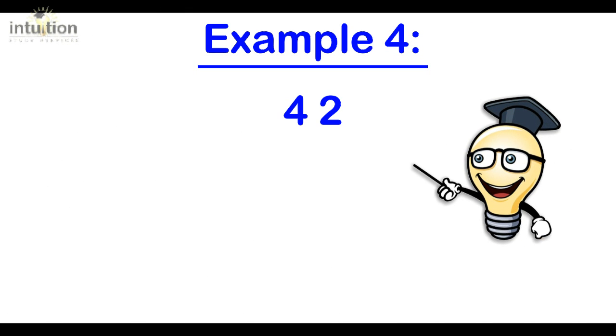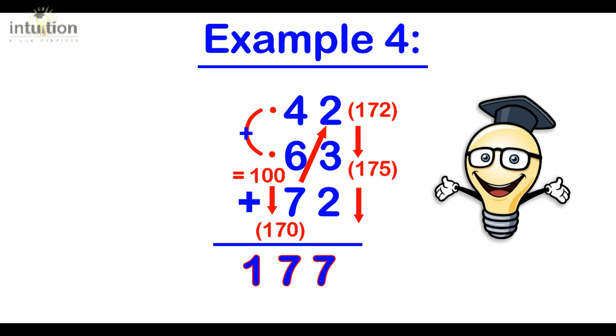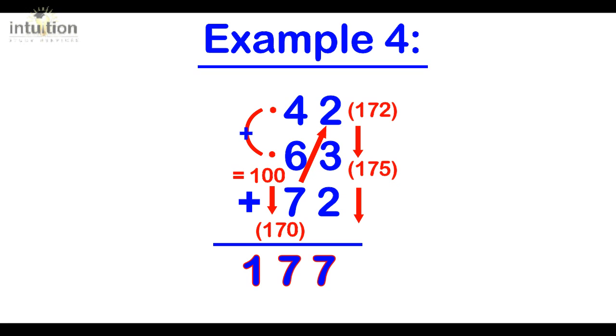Okay so let's take a look at another example. We've got 42 add 63 add 72. Can we notice anything special about these numbers? We have complements here as the 4 and 6 complement to make 10, but because they're in the tens column they will complement to make 100. So 4 and 6 makes 100, add the 7 makes 170, then we add the units: 172, 175, 177. What we want to take away from this is that we always want to check for complements first and then add the rest of the numbers. Otherwise we can just do cumulative adding.